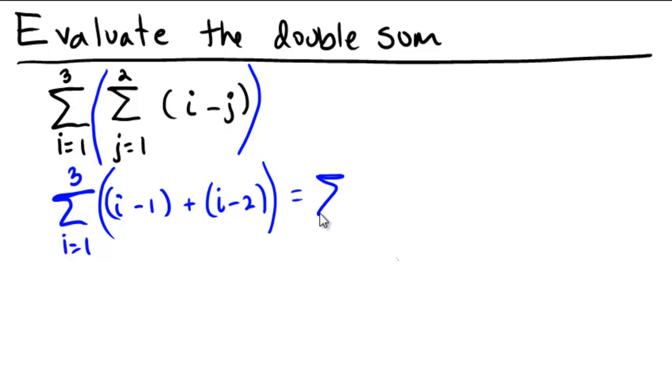And summation notation just means to add those together. So we would end up getting the summation of i equals 1 to 3 of i plus i, which is 2i, and then minus 1 minus 2, which is minus 3. So that gets rid of the first inner summation.